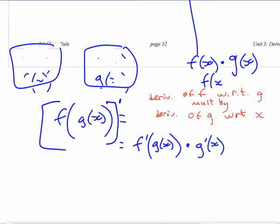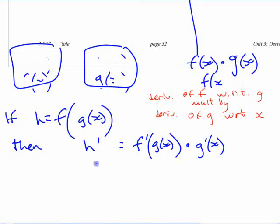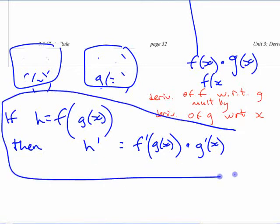The derivative of that is equal to f prime of g of x times g prime of x. The way that they do that in the book is instead of doing brackets like that, they say if they give another letter, they say if h equals that composition, then h prime is that. That's the chain rule written with that type of notation.